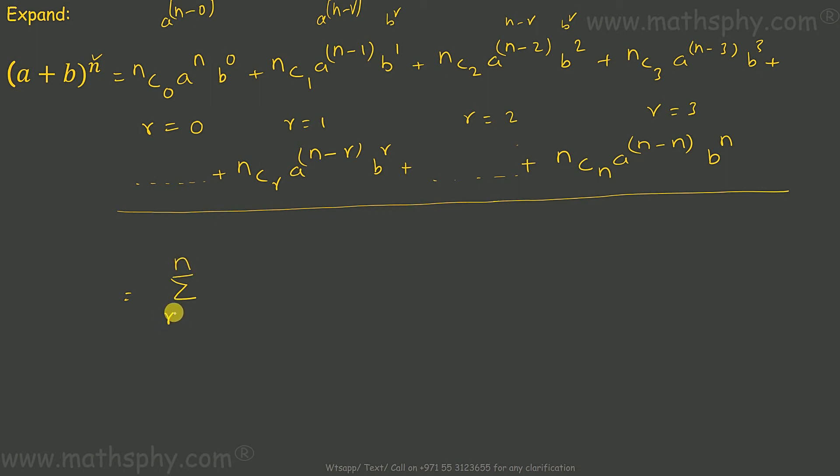where r starts with 0. When we are adding this, this, this, or all of them together, we are adding n c r into a raised to n minus r, and b raised to r. r starts with 0, so n c 0, a, n minus 0, b raised to 0. When r is 1, n c 1, a raised to n minus 1, b raised to 1. So this is symbolizing all these terms, together.